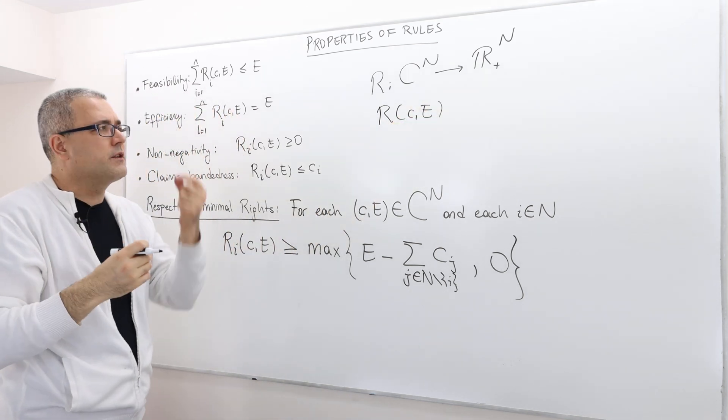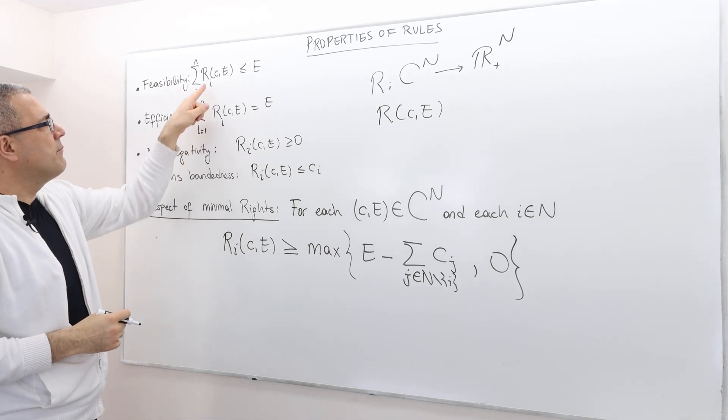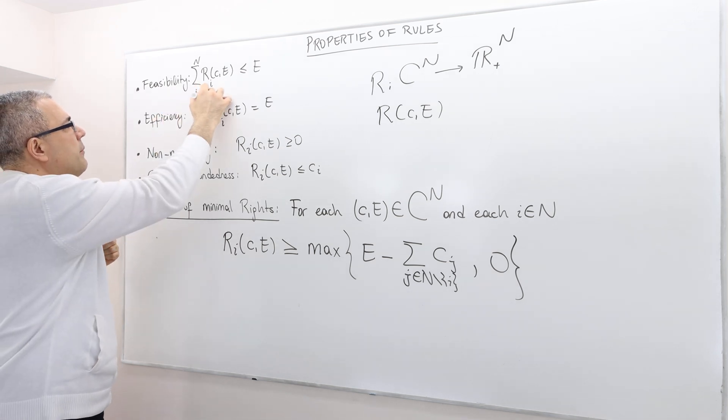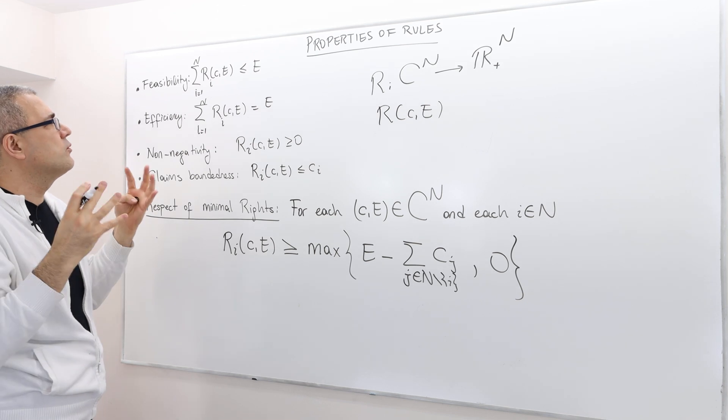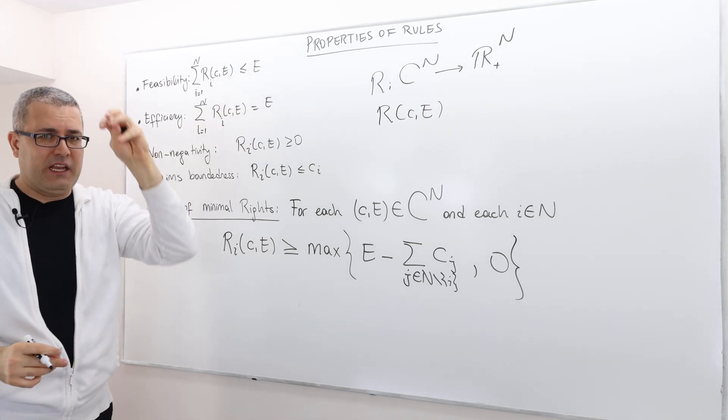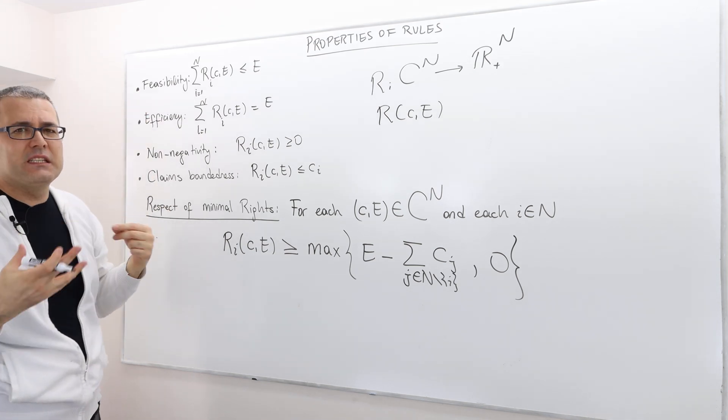So who is going to get how much? And so the summation from i=1 to N of R_i(C,E) basically tells me the total award we are giving to those N agents. Well, this shouldn't exceed what's available to them. So that's feasibility.